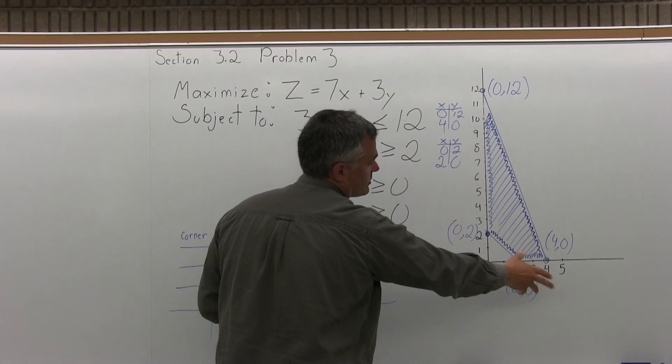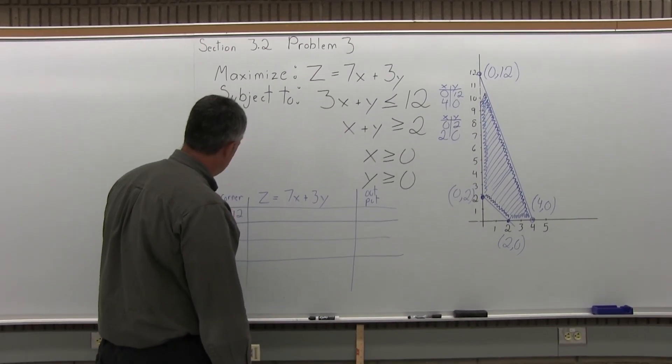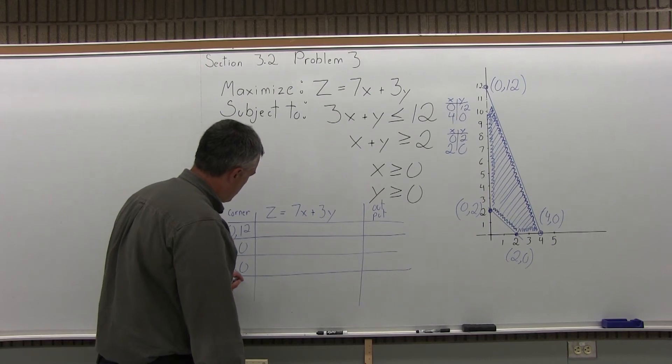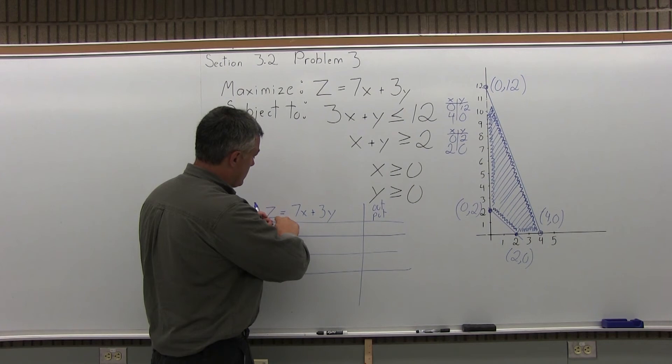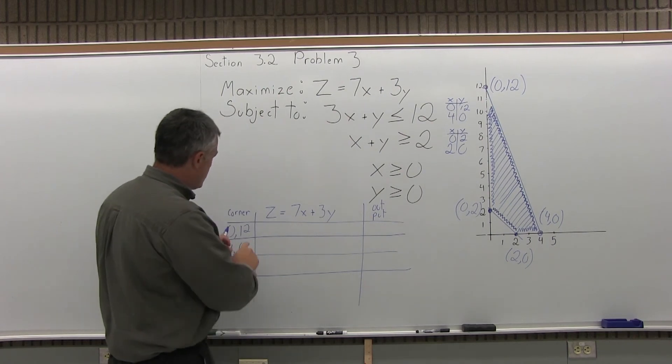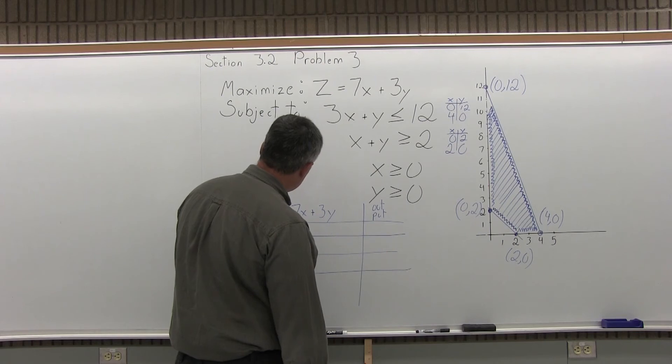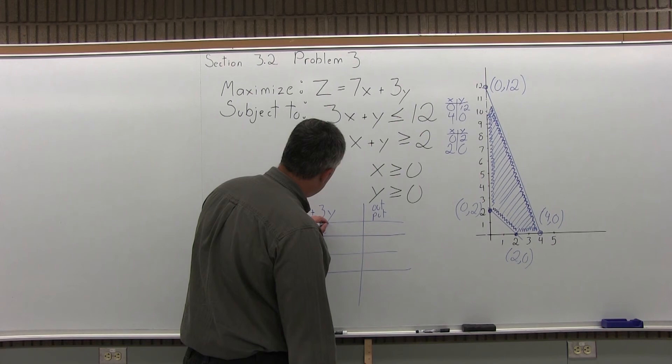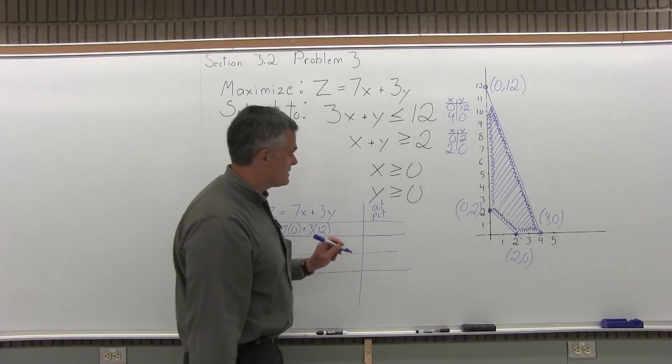So for the corner points, just list them all. Any order is fine as long as you don't miss any. So I will list 0, 12, 4, 0, 2, 0, and 0, 2. Those are all my corner points. And now for each one, I'm going to plug them into the equation that we call the objective function, z equals 7x plus 3y, and calculate the output. The first corner point is 0, 12. So z equals 7 times x becomes 7 times 0. 3 times y is 3 times 12. 7 times 0 is 0. 3 times 12 is 36. So 0 plus 36 is 36.